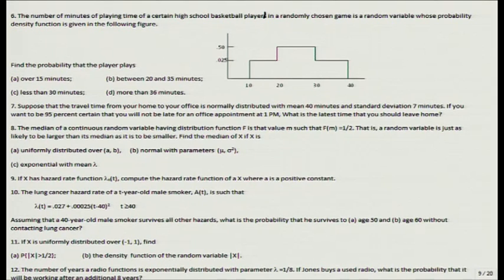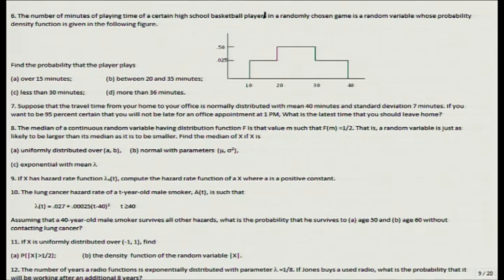Question 11: x is uniformly distributed over [−1, 1]. While discussing functions of random variables in the last lecture, I discussed how to handle P(|x| > 1/2), where x < −1/2 and x > 1/2, and how to find the density function of |x|. Question 12: the number of years a radio functions is exponentially distributed with parameter λ = 1/8, so the mean is 8. If Jones buys a used radio, what is the probability it will be working after an additional 8 years? This is an exponential distribution with the memoryless property.